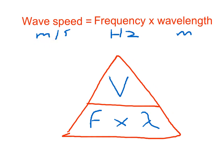Wave speed is measured in metres per second, frequency is measured in hertz, and wavelength must be measured in metres — it's important to remember this in case exam questions give values in centimetres that need converting. I've put together a formula triangle: wave speed is represented by v, frequency by f, and wavelength by the symbol lambda. To calculate wave speed, cover up v — it's frequency times wavelength. To calculate frequency, cover up f — it's wave speed divided by wavelength. To calculate wavelength, cover up lambda — it's wave speed divided by frequency.